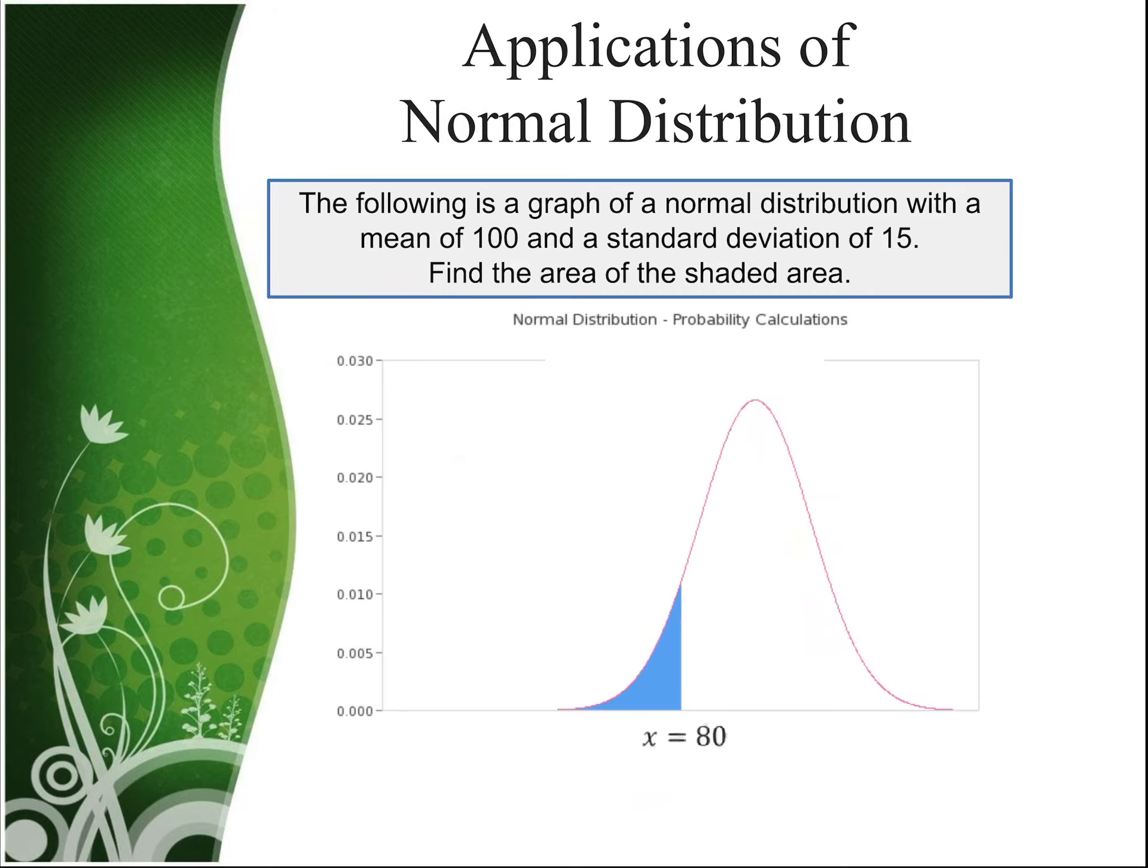Let's do some more examples. Let's say we have the following graph. Let's keep our mean still 100 and the standard deviation still 15, and let's find the area to the left of x equals 80. So we'll do the same thing. Now this time, since 80 is less than the mean, we would expect a negative z-score.